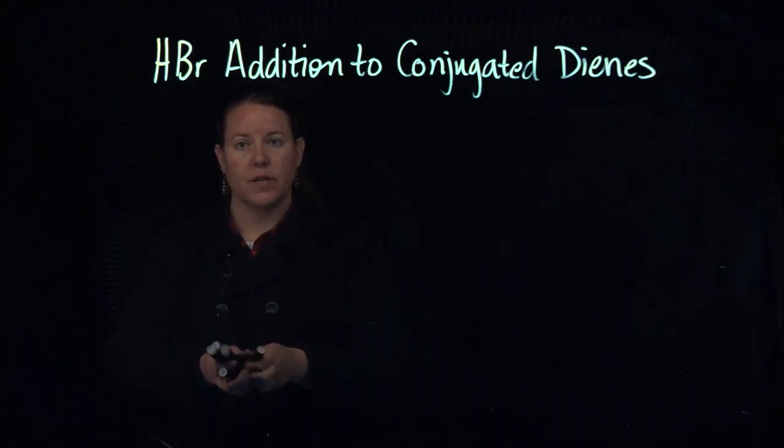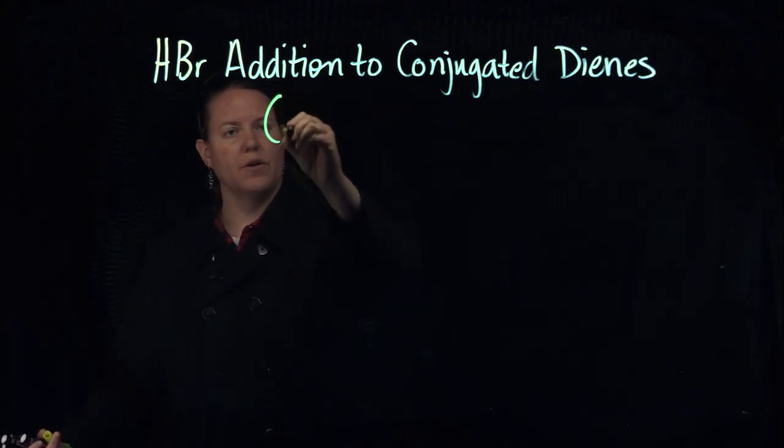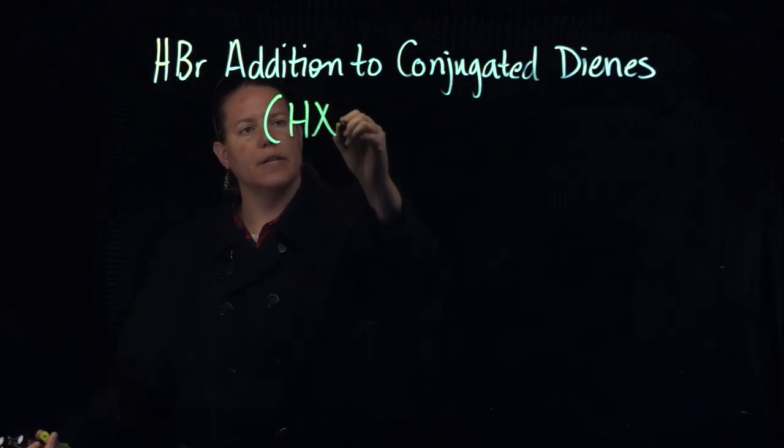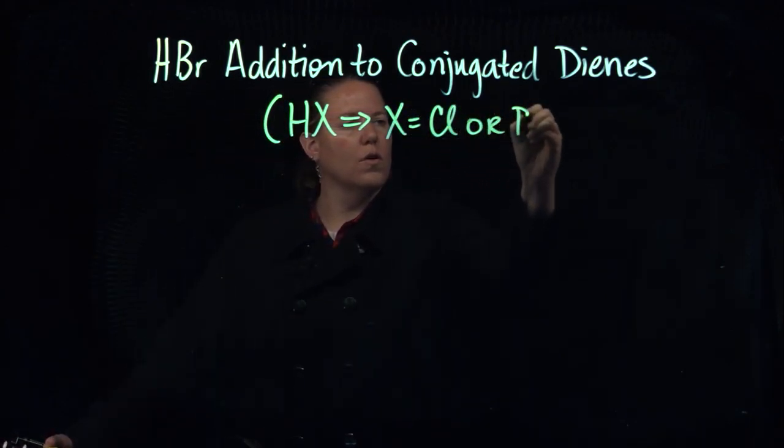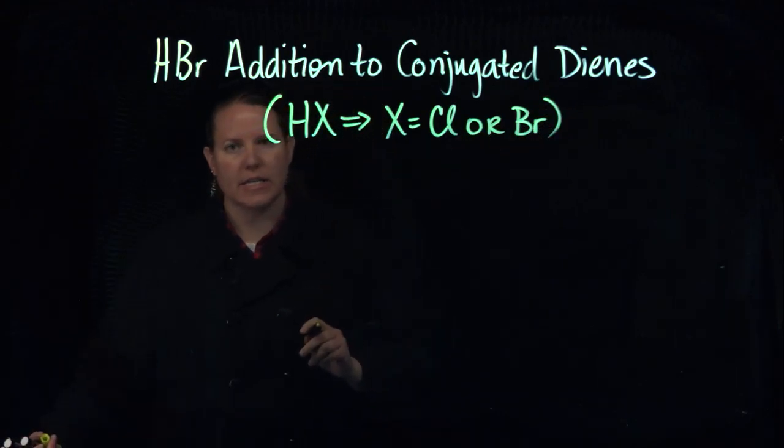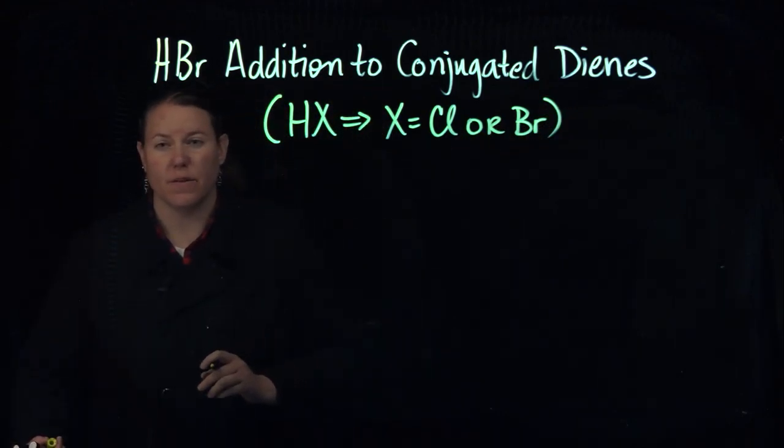In this case you can certainly use HBr, which is what we're going to use, but you could broaden that out to HX, where X is definitely a Cl or a Br. Doing this with I is a little bit tougher and takes a different set of conditions.